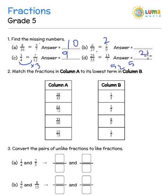Now let us look at the next one. We have these fractions given in column A and we have to bring them to the lowest terms in column B — which means we have to reduce to lowest terms. So you see 18 and 45: the 9 times table is in common. So when I cancel it becomes 2 by 5.